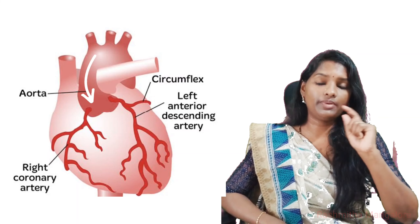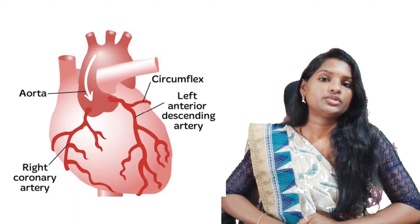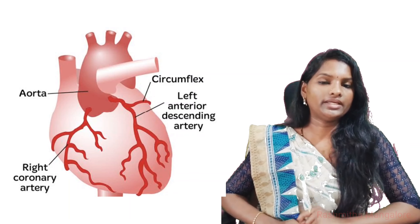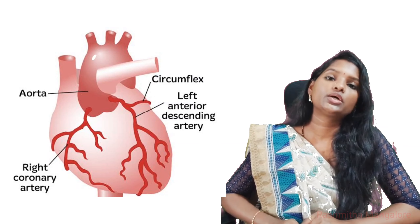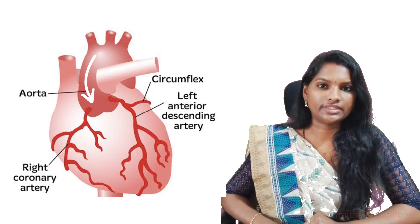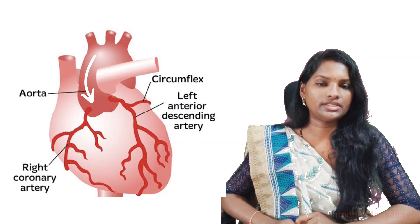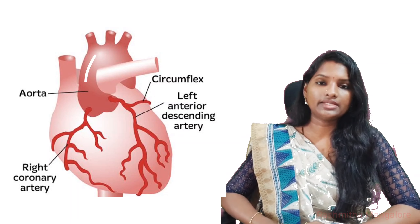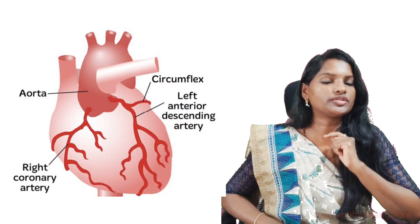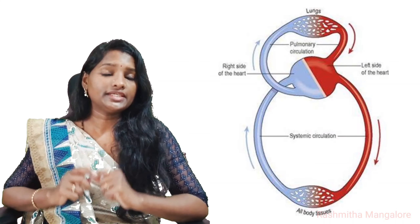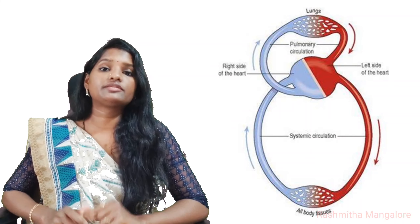From the aorta, one artery branches back to the heart to supply it with oxygenated blood — this is the coronary artery, the only artery that supplies the human heart with oxygenated blood. In summary, the right side of the heart receives deoxygenated blood and pumps it to the lungs.